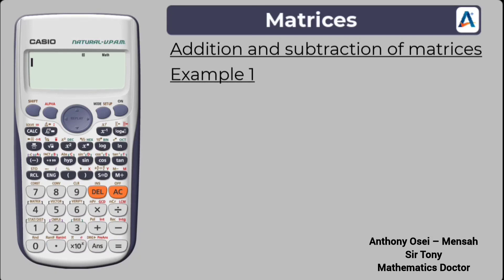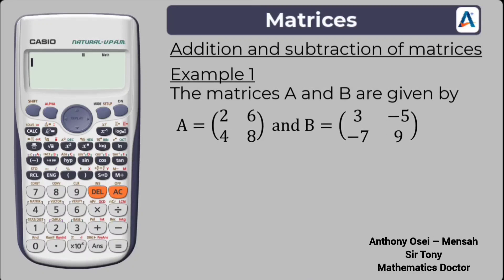Example number 1. The matrices A and B are given by: A is equal to 2, 6, 4, 8 and B is equal to 3, negative 5, negative 7, 9. Find A plus B. To solve a matrix with a calculator, you first have to identify the nature of the matrix. This is a 2 by 2 square matrix because there are 2 columns and 2 rows in both matrix A and matrix B.